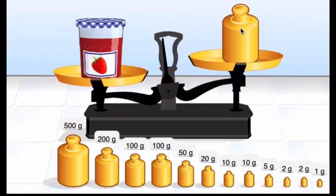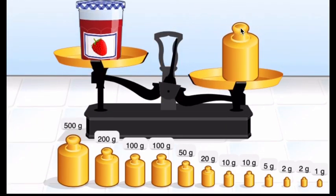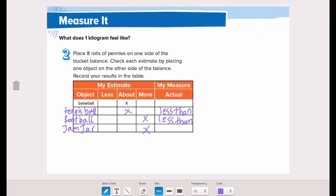Let's place one kilogram on one side of the scale and the strawberry jam on the other side. The strawberry jam is also less than one kilogram! Now I want you to go around your house and find an object that is more than one kilogram.